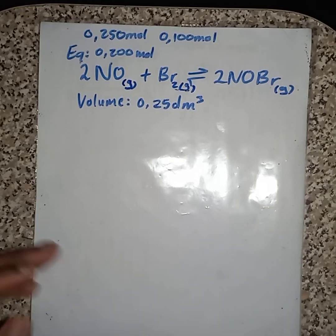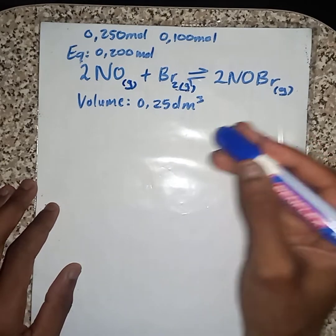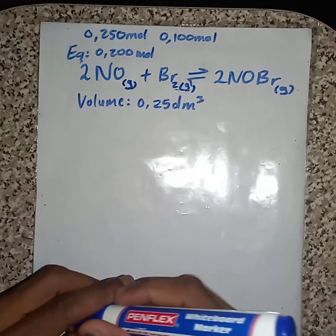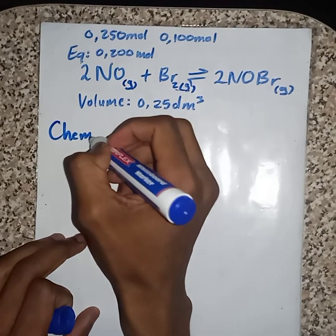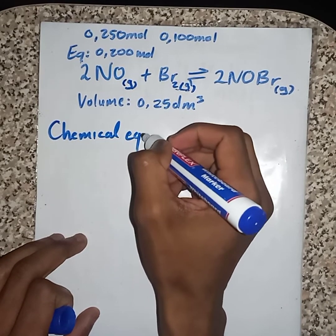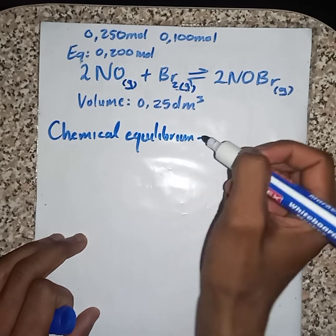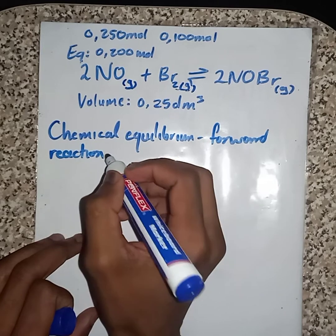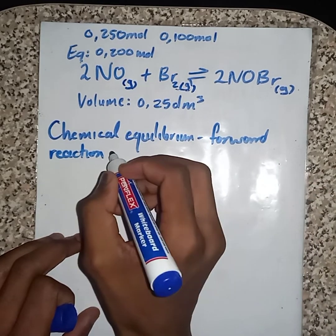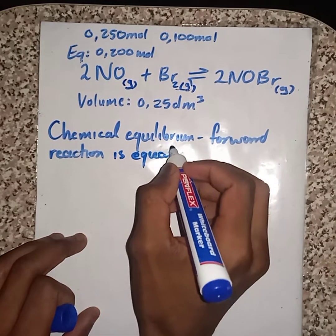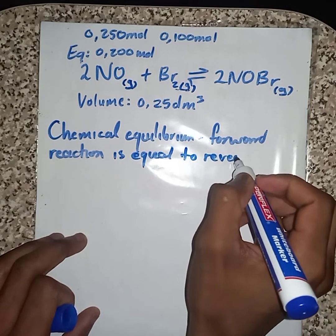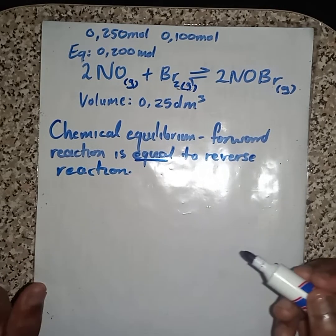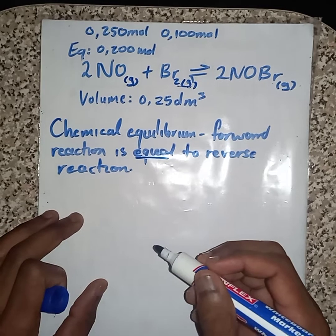Good day fellow, today we are going to do chemical equilibrium. Let us try to do some revision before answering this question. The term chemical equilibrium implies when the rate of forward reaction is equal to the rate of the reverse reaction. The rate of forward reaction must be equal to the rate of the reverse reaction.